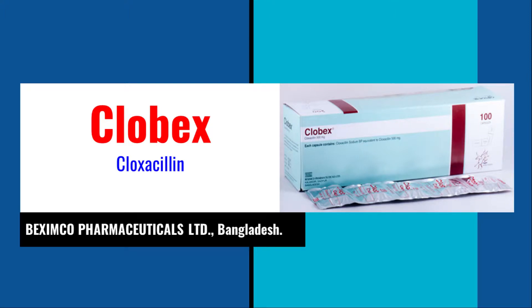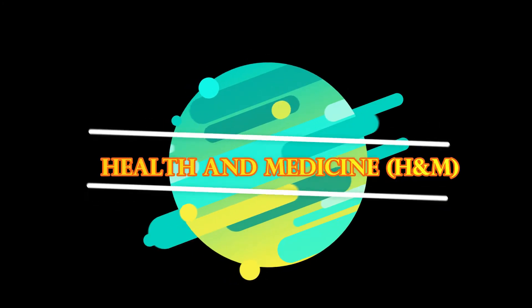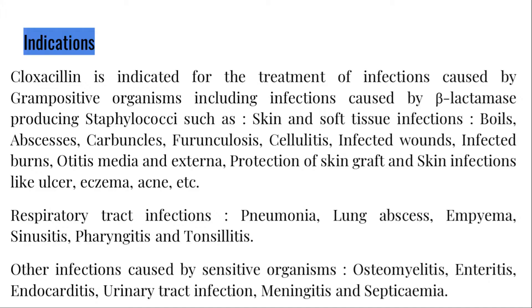Clovex group name: cloxicillin, produced by Beximco Pharmaceuticals Limited, Bangladesh. Cloxicillin is indicated for the treatment of infections caused by gram-positive organisms, including infections caused by beta-lactamase-producing organisms.